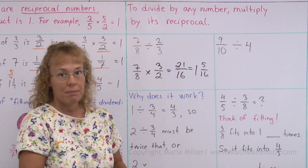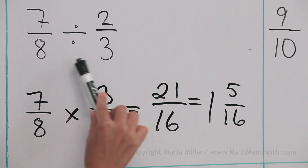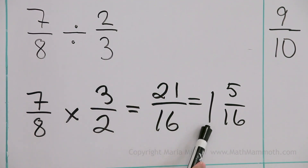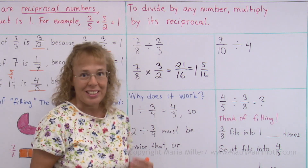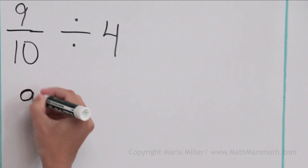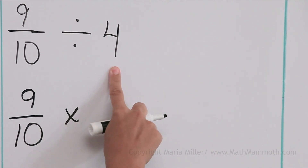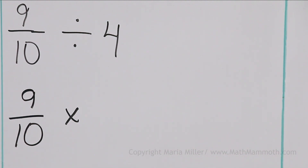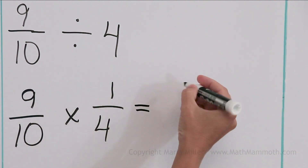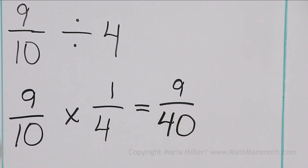Does it make sense? You can think of the fitting — 2 thirds fits into 7 eighths somewhat over one time. Yes, that makes sense. Next: 9 tenths divided by 4. I do the same — this first fraction does not change, this changes into a multiplication, and now I write the reciprocal of 4, which is 1 fourth. Then we multiply: 9 times 1, and 10 times 4, which gives 9 over 40.